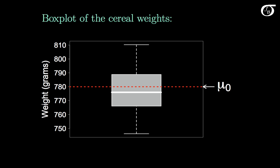Here's a box plot of the cereal weights for the 25 boxes, and I've plotted in a red line representing the hypothesized value of 780 grams. The sample mean was found to be 776 grams, and we want to see if that difference is a significant difference. It doesn't look like a big difference, but we can't tell whether that is a significant difference until we carry out the test.